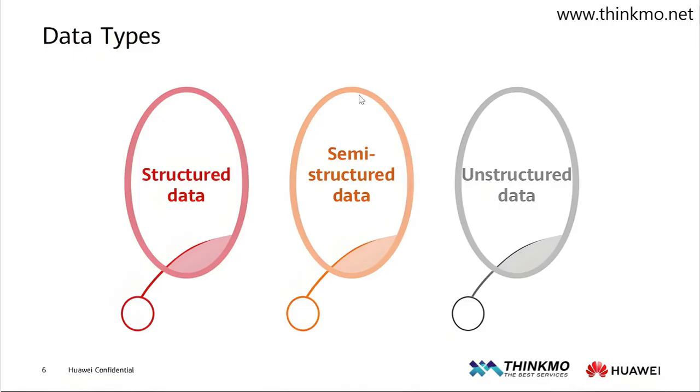So what does semi-structured data, which is in between the two, mean? It actually has some rules, but not many rules. For example, like the HTML language in our web pages. There are different headers, right? There are header titles, and we have our main text. There's a header and a footer. These are all rules.